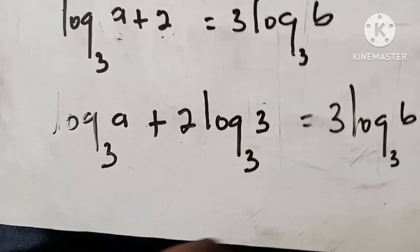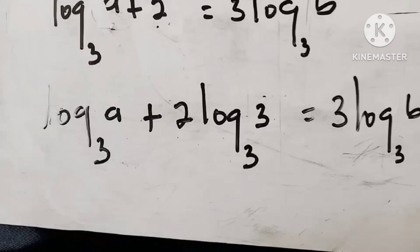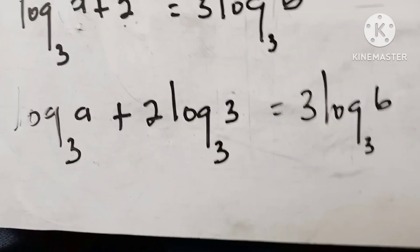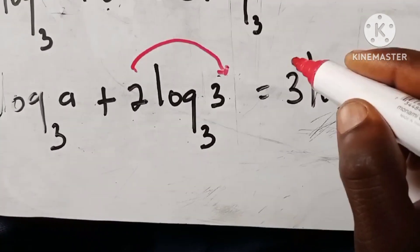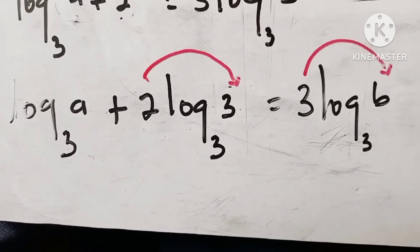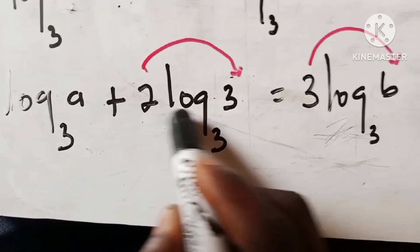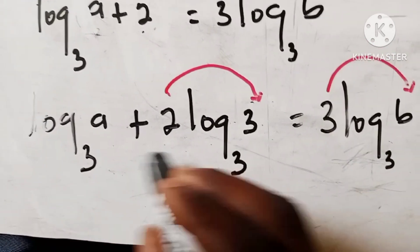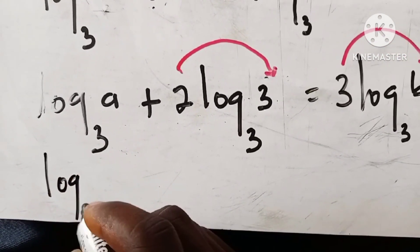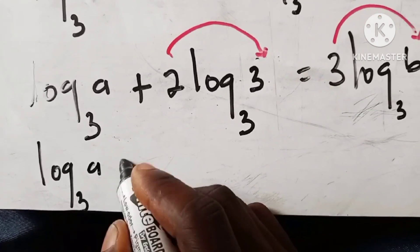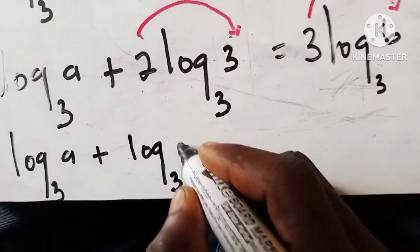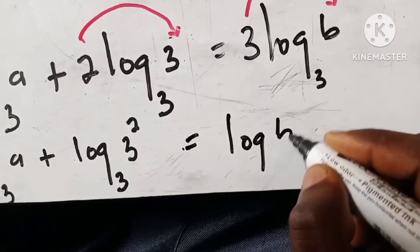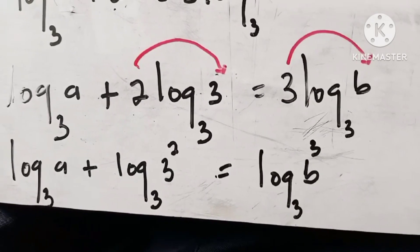Now we apply the power rule of logarithms: a coefficient in front of a log can move up as an exponent. The 2 in 2·log(3) base 3 moves up to give log(3²) base 3. Similarly on the right side, 3·log(B) base 3 becomes log(B³) base 3. So we now have log(a) base 3 plus log(3²) base 3 equals log(B³) base 3.